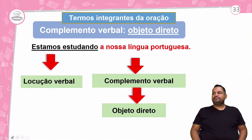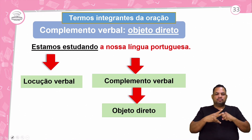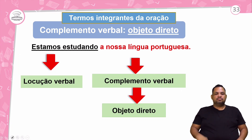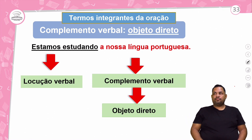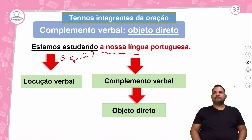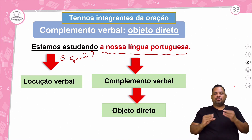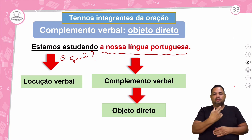Complemento verbal, objeto direto. Quando o complemento verbal não precisa de preposição — estamos estudando a nossa língua portuguesa. Quando eu falo essa locução verbal, pergunta 'o quê?'. Essa parte toda é o complemento verbal. Veio sem auxílio de preposição. Estamos estudando nossa língua portuguesa — então o objeto é direto.